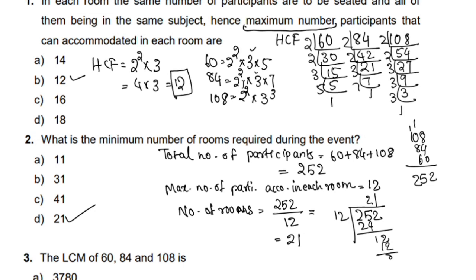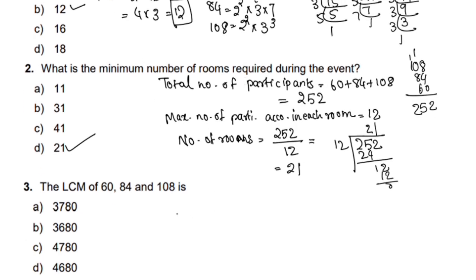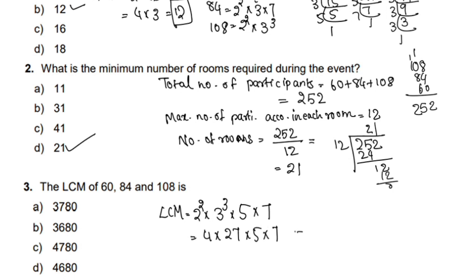2 has the greatest power of 2 raised to 2. The LCM is equal to 2² × 3³. The greatest power of 3 is 3 raised to 3. We also include 5 and 7. So: 2² = 4, 3³ = 27, multiplying gives 4 × 27 × 5 × 7 = 3,780.